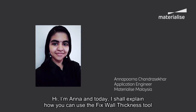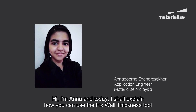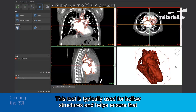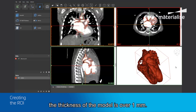Hi, I'm Anna and today I shall explain how we can use the Fixed Wall Thickness Tool in Materialise Mimics and Print. This tool is typically used for hollow structures and helps ensure that the thickness of the model is over 1 mm.